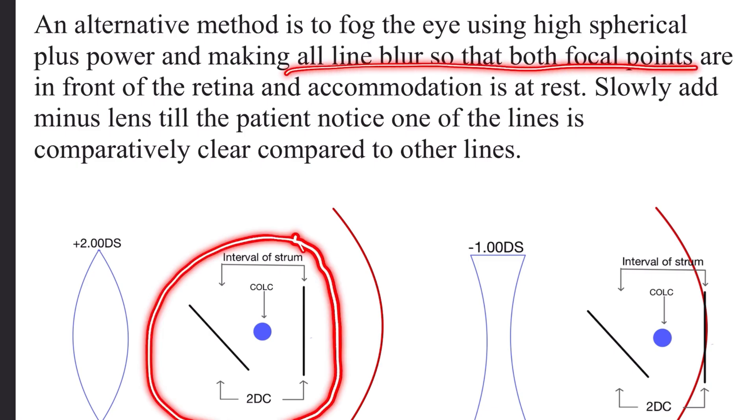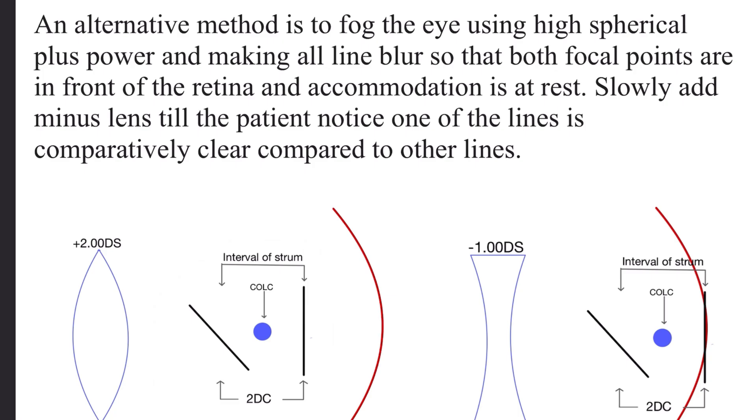So all lines on the chart will look blurred for the patient. And we will slowly add minus spherical power, keep on adding it until the patient sees one of the lines in the chart is clear compared to the other lines. As we have come to the point where one of the lines has become clearer for the patient than the others.